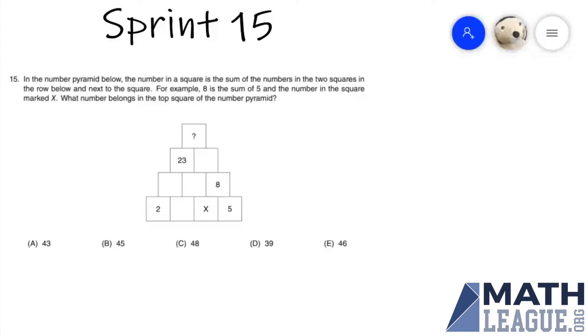In the number pyramid below, the number in a square is the sum of the numbers in the two squares in the row below and next to the square. For example, eight is the sum of five and the number in the square marked x. What number belongs in the top square of the number pyramid?